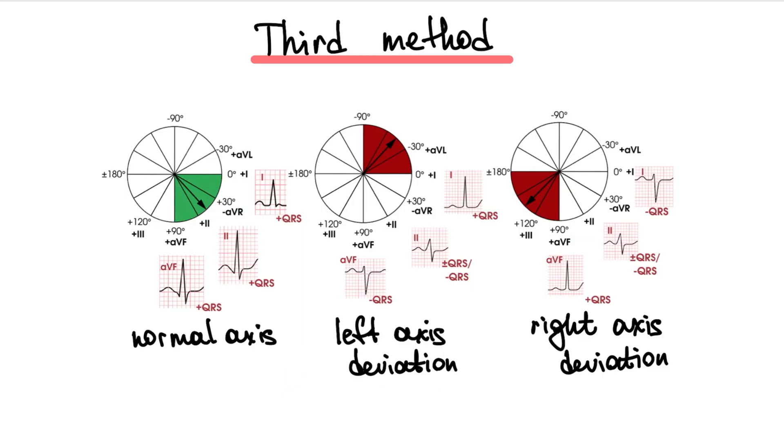And the third method is the analysis of QRS complex at lead 1, 2, and AVF. When we see a positive QRS complex at all three leads, it's normal axis. When we see a negative QRS complex at lead 1, it's right axis deviation.